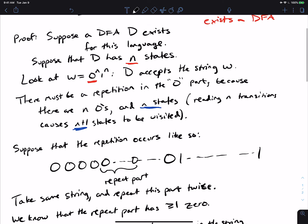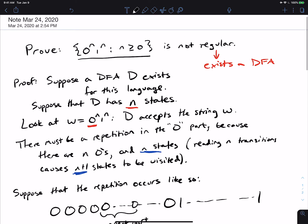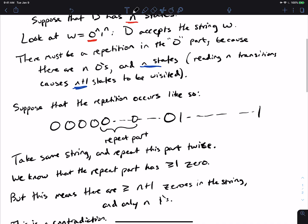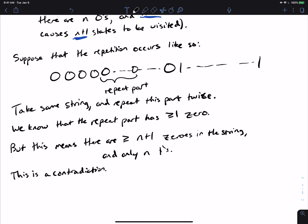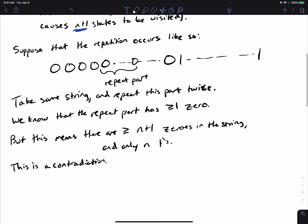Because the language that we talked about was the set of all strings that have the same number of zeros and ones. And if we derive a string that has more zeros than ones, and we know that it will land in the accept state.